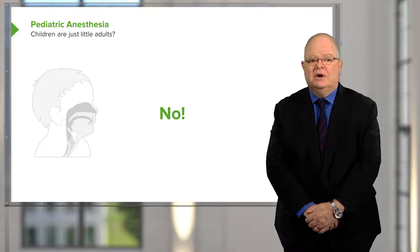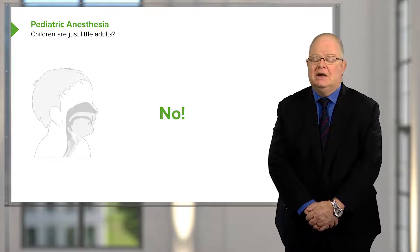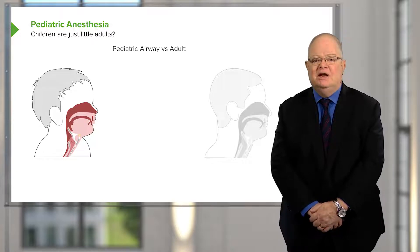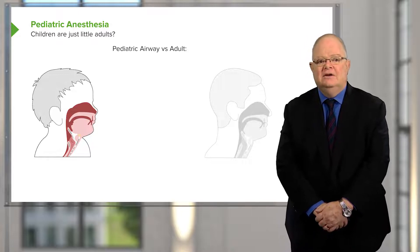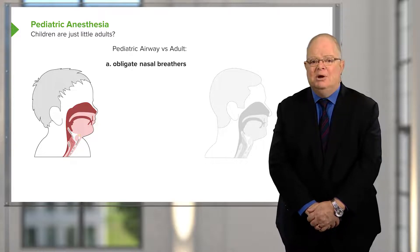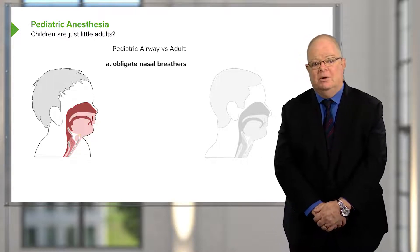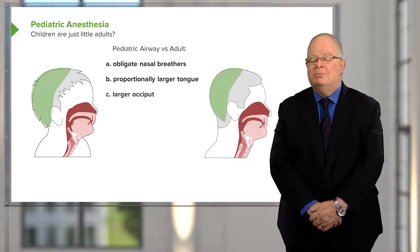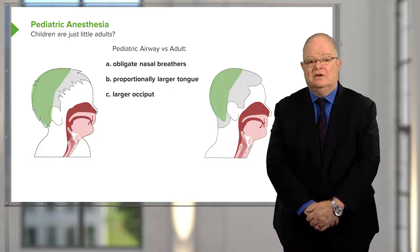The pediatric airway is quite different from the adult airway. As an adult anesthesiologist, one of the things I dread is having to intubate a child, particularly under two years of age. They are obligate nasal breathers, so they cannot maintain their airway if the nose is plugged — they cannot breathe through their mouths when very small. They also have a proportionally much larger tongue and a much larger occiput, making it difficult to extend the head to the same degree as in adults.